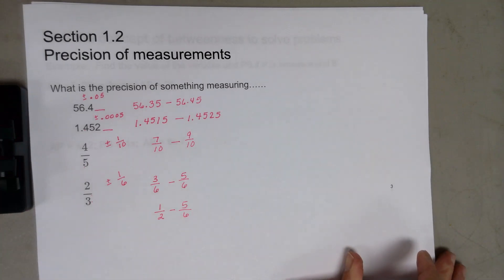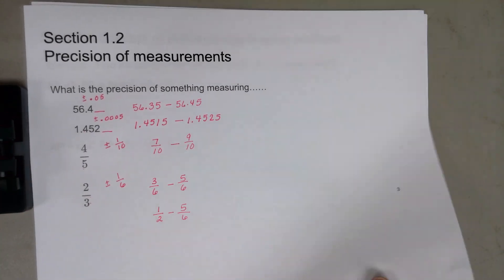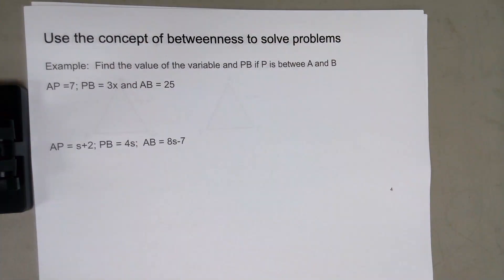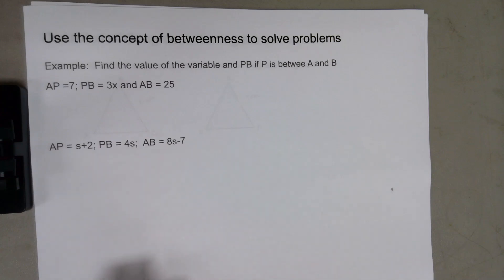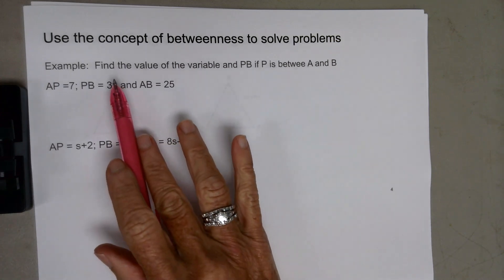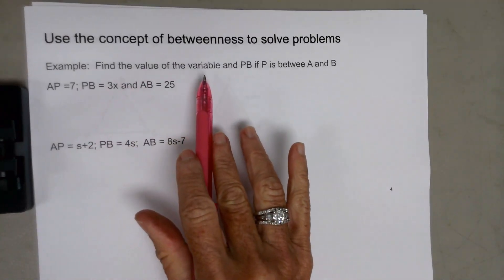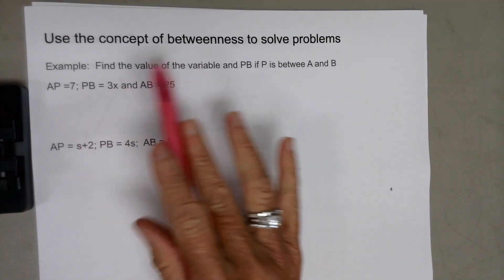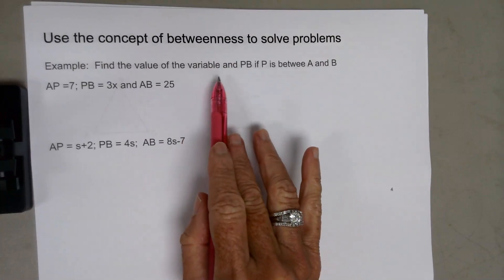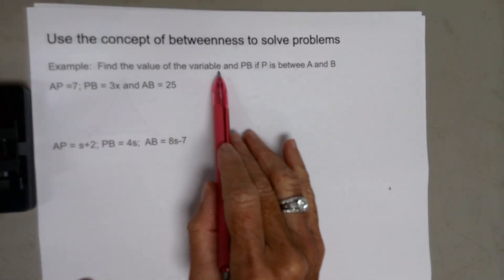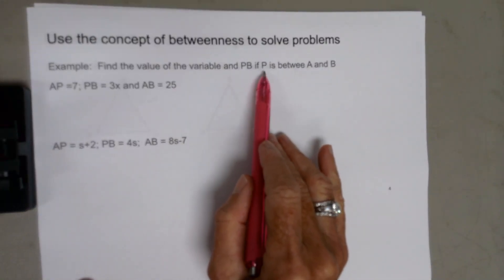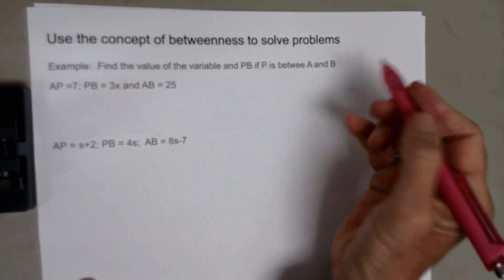Make sure you can find the precision of a measurement. Then you have to use the concept of betweenness to solve a problem. Between literally means somewhere between two points. An example problem might ask you to find the value of the variable — x, q, or w — when it tells you that P is between A and B.